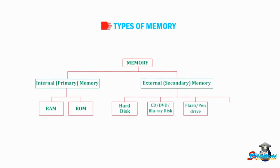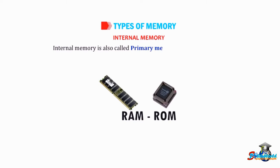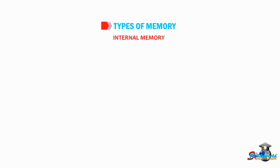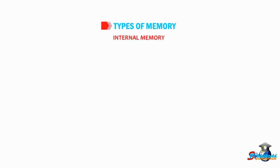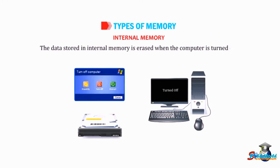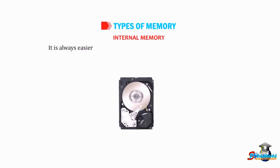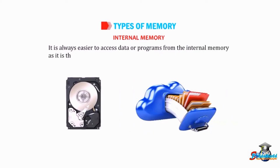Let's talk about the internal memory. Internal memory is also called primary memory or main memory. It is the built-in memory designed to store data and instructions while the computer is working. The data stored in internal memory is erased when the computer is turned off. It is always easier to access data or programs from the internal memory, as it is the fastest of all forms of computer data storage.